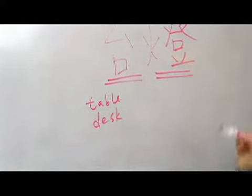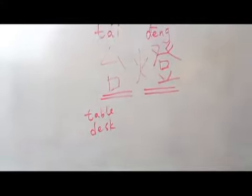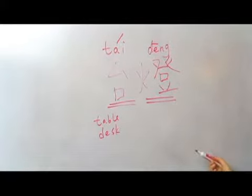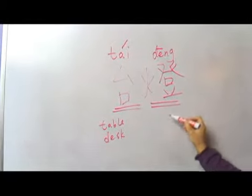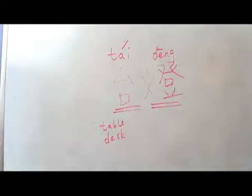灯 is the Chinese character we use to refer to any light, all kinds of lights. So 台灯 is table lamp.